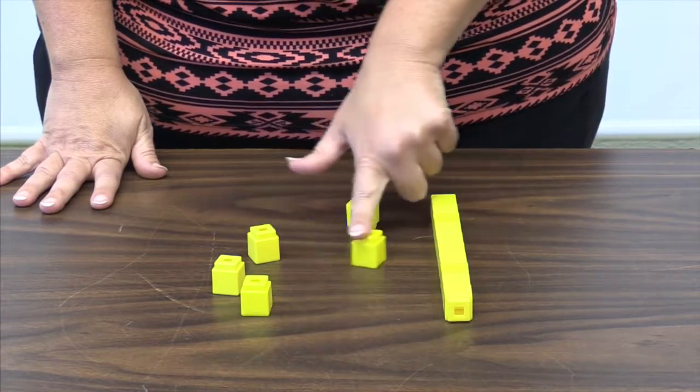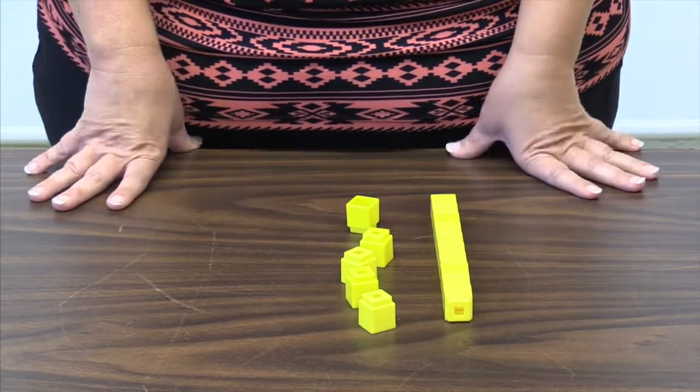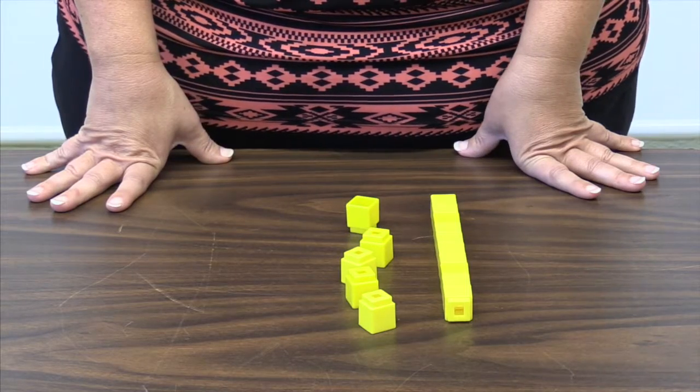We count to get the result. Ten, eleven, twelve, thirteen, fourteen, fifteen. The result is fifteen, or one ten and five ones.